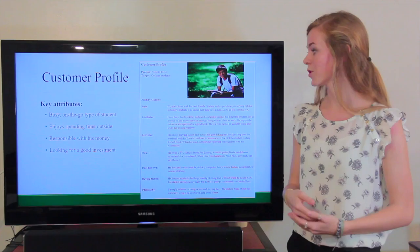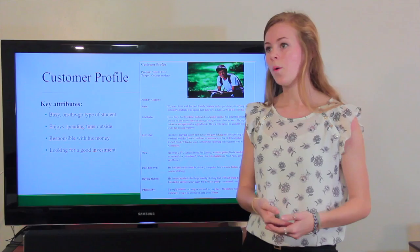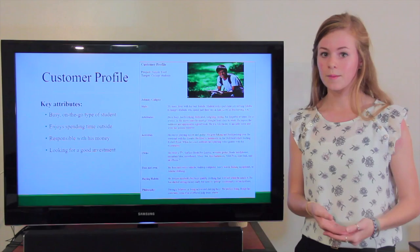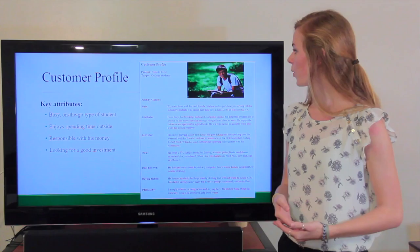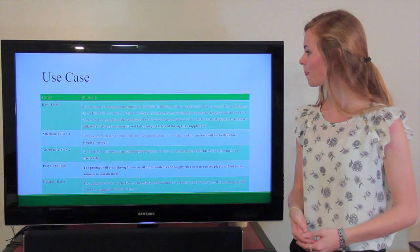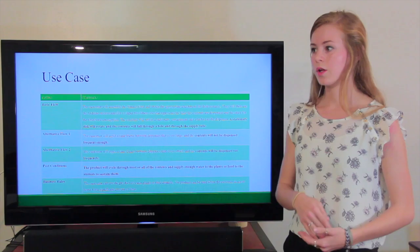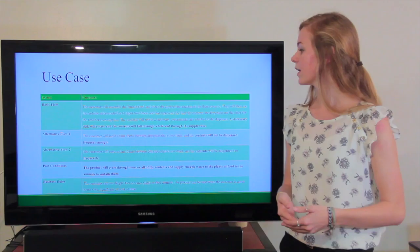Next, the team worked on developing a customer profile. This is the embodiment of the typical student that we would be selling to in the target market. For our customer profile, our customer is Johnny Calypso. He's a busy, on-the-go type of student who enjoys spending time outside, whether hiking or playing sports on the drill field with his friends. He's very responsible with his money, but he is looking for a good investment just like all college students would. These are some of the key attributes to keep in mind when we are further developing our product.